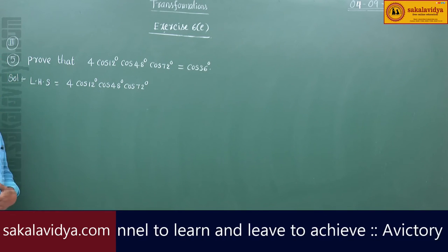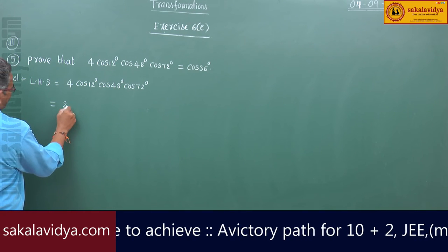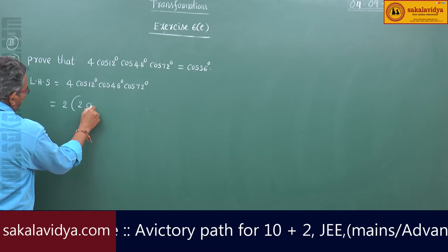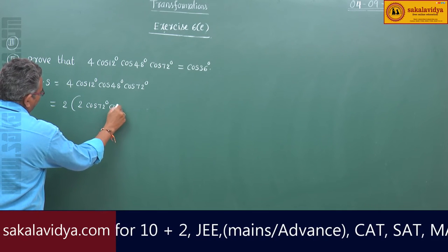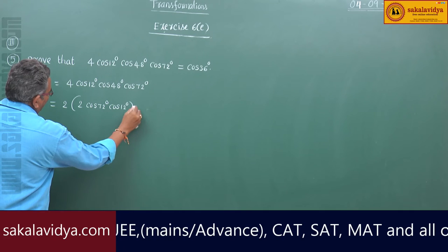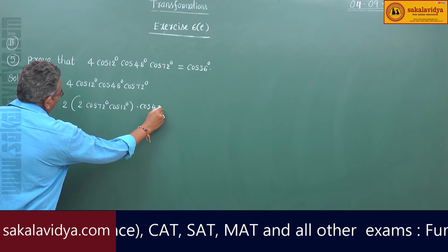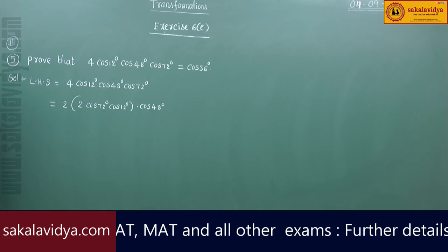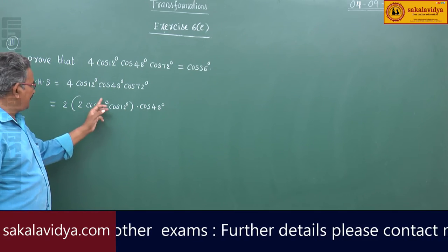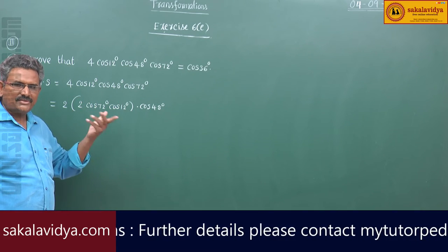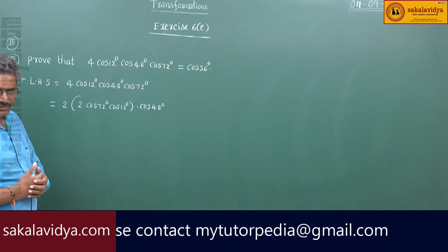So this can be rewritten as 2 times 2·cos72 degrees, cos12 into cos48. Why should we write like this? Since 72 minus 12 becomes 60, and 72 plus 12 is 84.